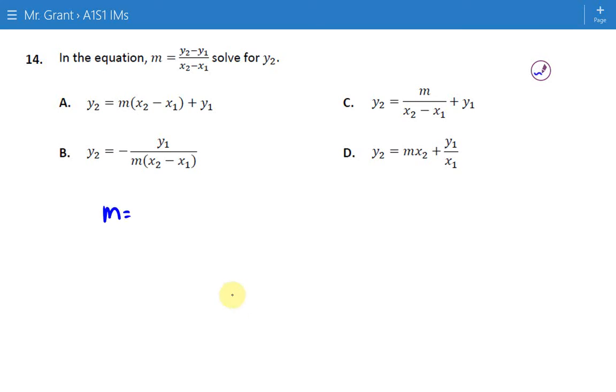Let's break this down a bit at a time. In order to get y2 by itself, we're probably going to want to add y1 because it's attached to this by subtraction, so we can add that to both sides.